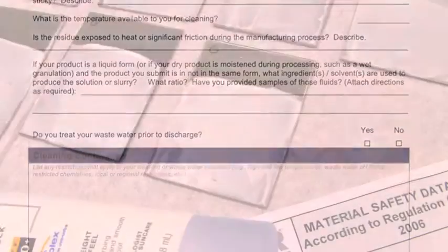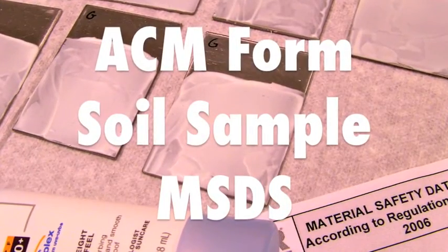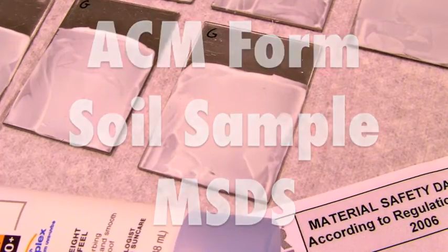The completed ACM form, a small sample of your product, and a material safety datasheet are all that we need to get started.